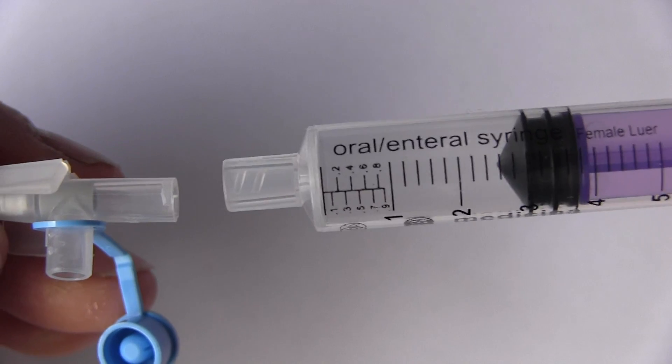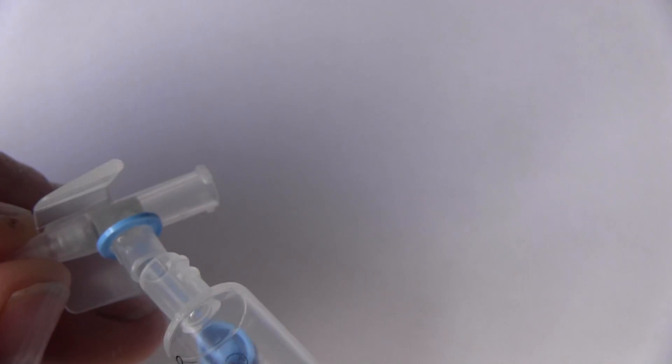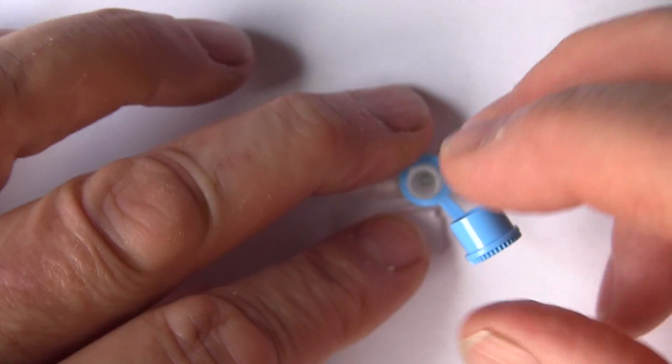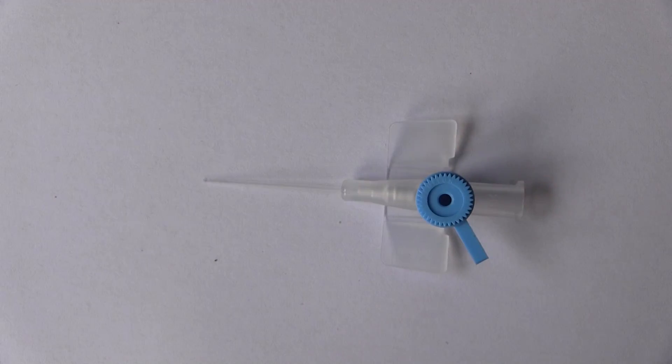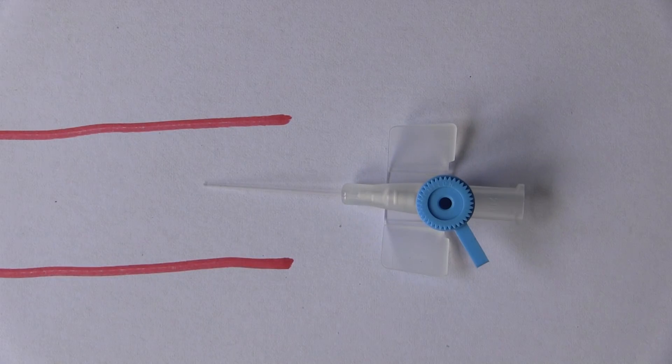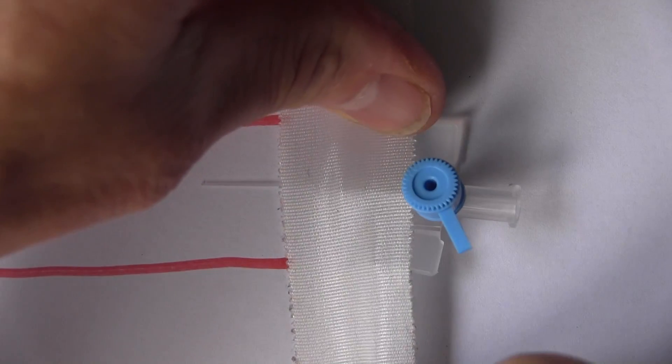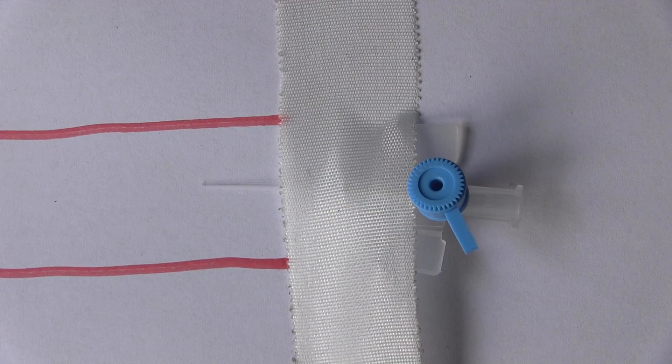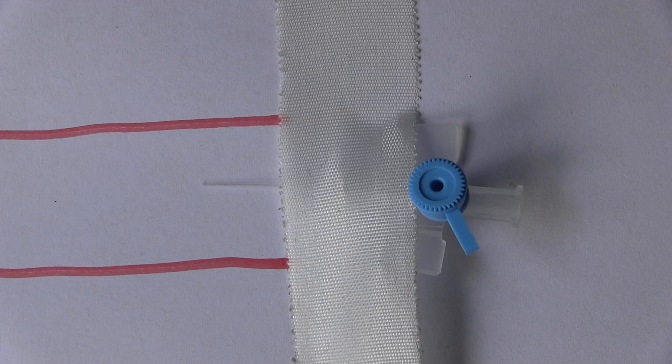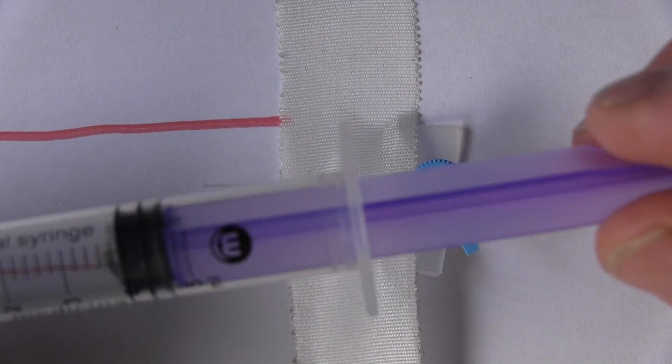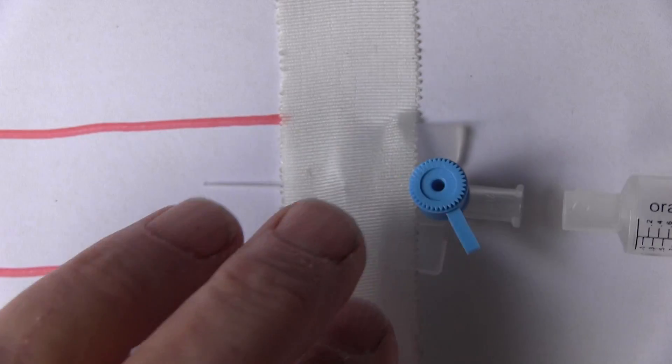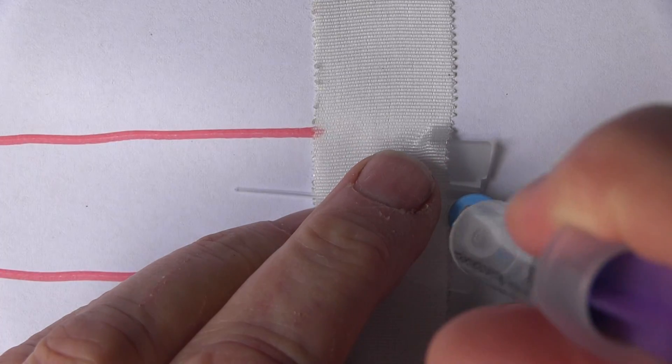So there we have our intravenous device, and this would be into a vein, of course. Here's the vein, and we'll have our device nicely secured, stop it moving about, taped onto the patient's skin. Now if I've got some drug drawn up in my enteral syringe, try to connect it up inadvertently, it's impossible. Can't do it, won't physically fit.